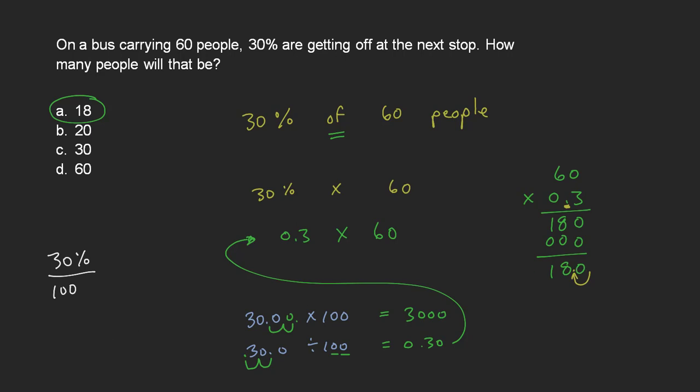So the answer is 18, which corresponds to what I had here. So 18 people out of the 60 is the same as 30% of the 60.